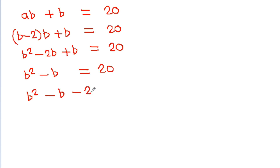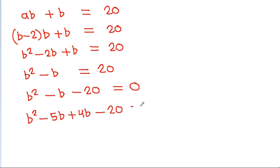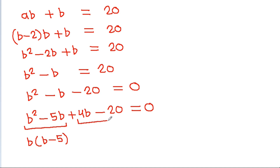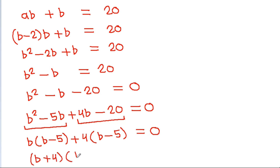So b squared minus b minus 20 is equal to 0. Factoring: b squared minus 5b plus 4b minus 20 equals 0, which gives b(b minus 5) plus 4(b minus 5) equals 0.